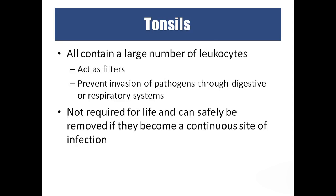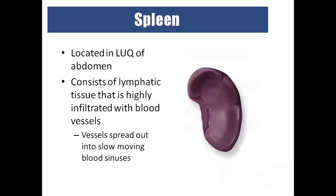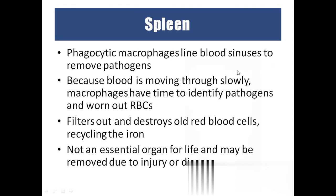The function of tonsils is that they contain white blood cells inside, acting as filters for pathogens — clearing the air, food, and liquids entering the digestive and respiratory systems. The spleen is located on the left side of the abdomen, contains lymphatic tissue, and highly filtrates the blood vessels. The spleen also contains phagocytic macrophages, which are white blood cells. When blood moves slowly into the spleen, it identifies pathogens and kills them, also destroys old RBCs, filters them, recycles the iron, and sends the remaining bilirubin to the liver for processing. The spleen is not an essential organ — we can survive without it.